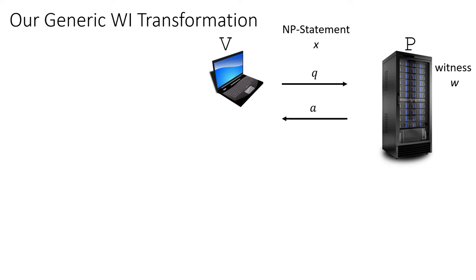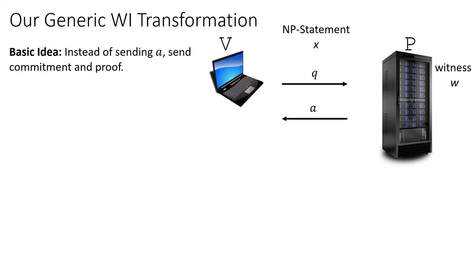For the witness indistinguishability transformation, in the original delegation scheme, some information about the witness may leak to the verifier through the response A. The basic idea is, rather than sending A in the clear, we send a commitment to A and a proof that the committed value satisfies the verification procedure. This proof needs to be a witness indistinguishability proof. Since the WI proof only applies to a statement about the value inside the commitment and not about the original NP statement, even if we start with a WI proof that is not succinct, the eventual communication complexity is going to be succinct.